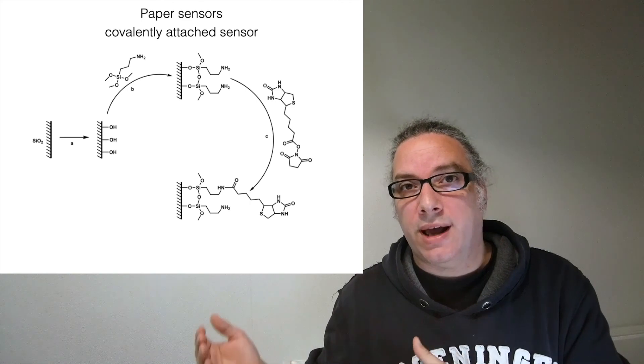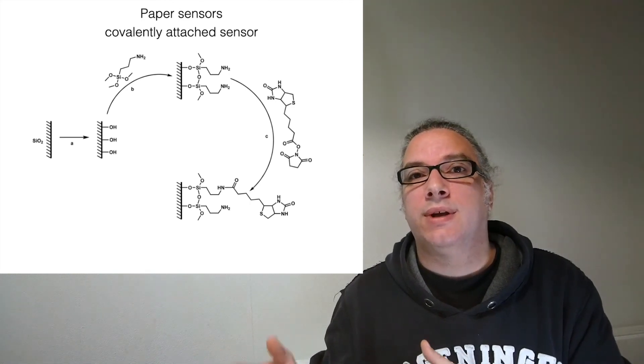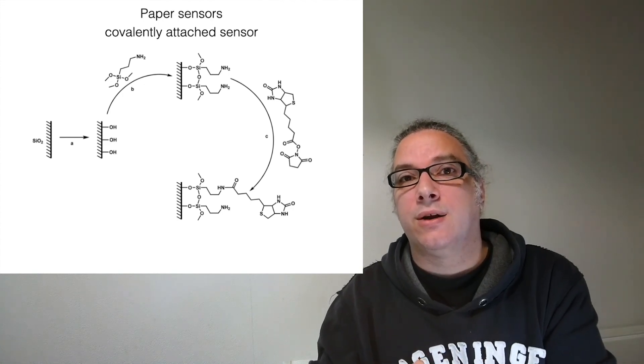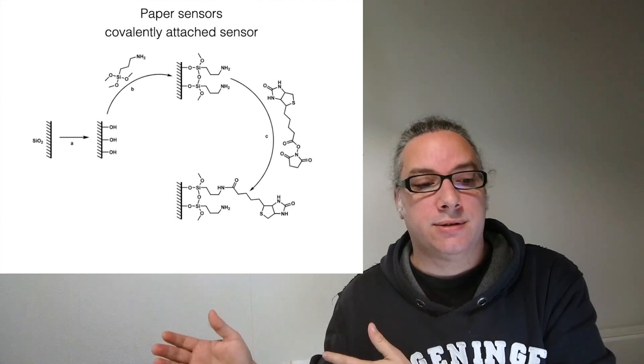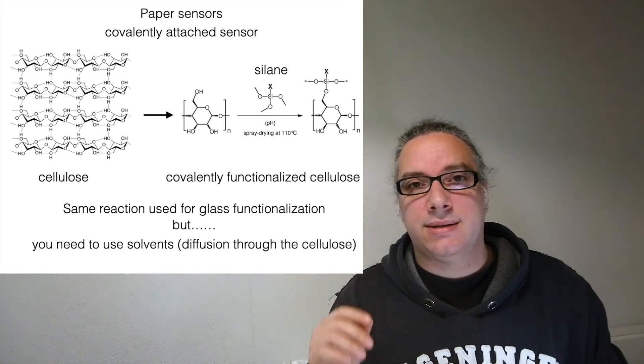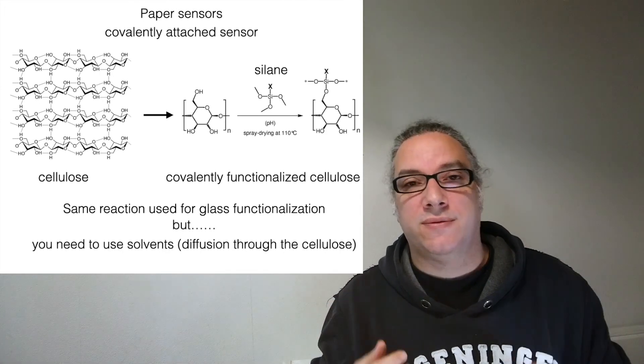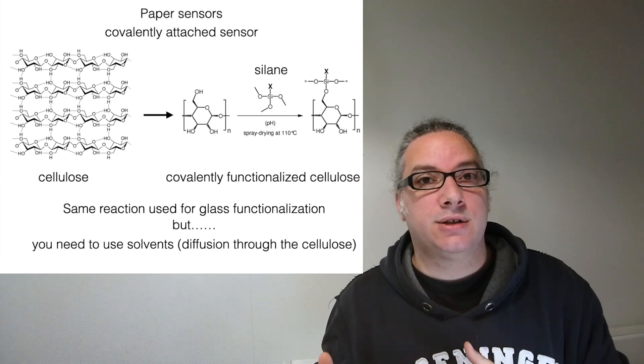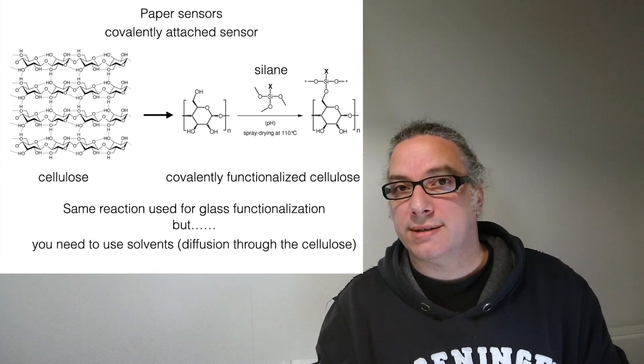So you can do multiple reactions directly on paper. At this point I have not only covalently attached molecules on the surface but I can go on and make other reactions. And this is exactly the same reaction that we are using for modifying glass, for attaching molecules on glass. So this silanization is the reaction that we use also for glass.